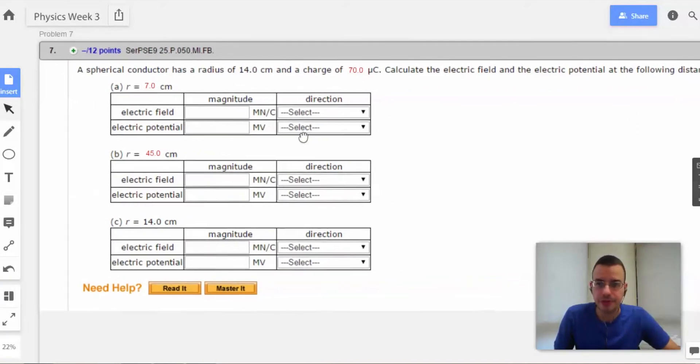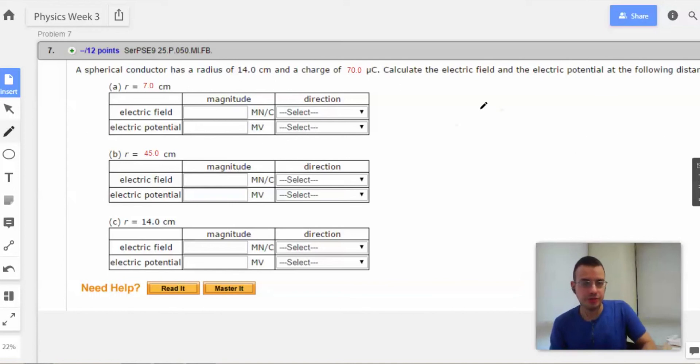So a spherical conductor. First, I'll start by drawing a picture. Here's my sphere. This sphere has a radius of 0.14 meters and a charge of 70 times 10 to the negative 6 coulombs.